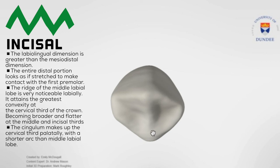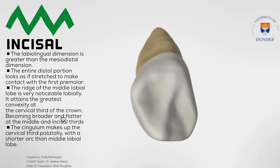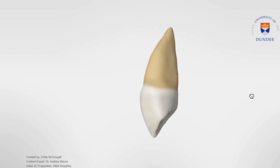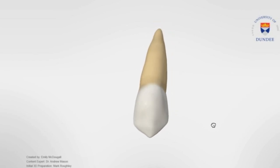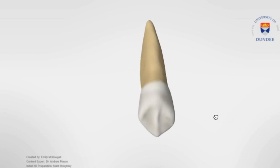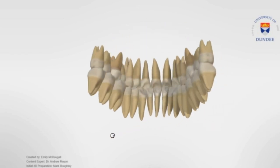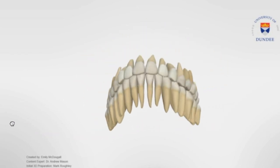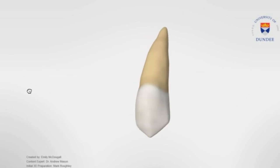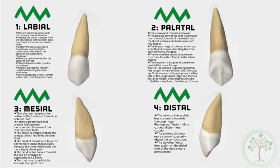The cingulum makes up the cervical third palatally with a shorter arc than the middle labial lobe. That brings us to the end of the video — please consider leaving a like if you found it helpful and subscribe for more, as we'll be covering the whole dentition as well as more videos relating to dentistry and medicine. All sources that made this video possible can be found in the description below, and as always feel free to pause, screenshot, and use this summary sheet for your own independent study.